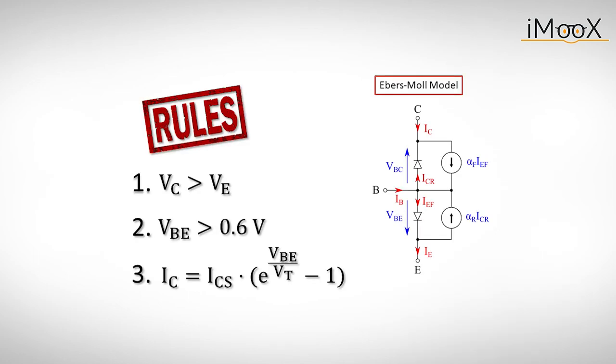Without going too much into detail, we get a new equation for our collector current, which is called the Ebers-Moll equation. It is derived from this more complex model of a bipolar transistor. If you want to know more about the Ebers-Moll model, you can find some links in the video description.